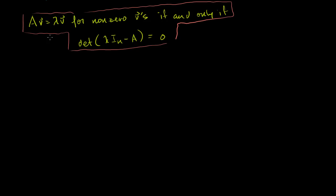In the last video, we were able to show that any lambda that satisfies this equation for some non-zero vectors v, then the determinant of lambda times the identity matrix minus A must be equal to 0.